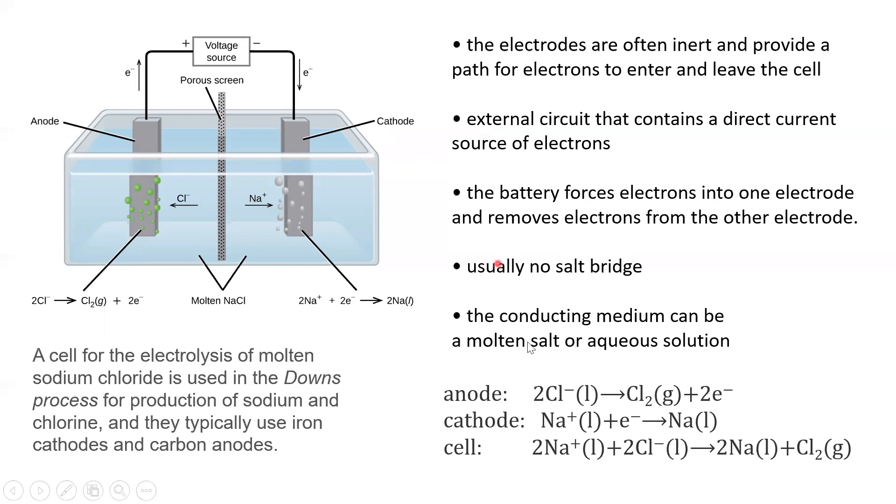So in this case, the chloride ions are being oxidized into chlorine gas and we're generating electrons. The sodium ions are accepting those electrons to become sodium atoms. And we're producing sodium atoms, liquid sodium, and we're producing gaseous chlorine.